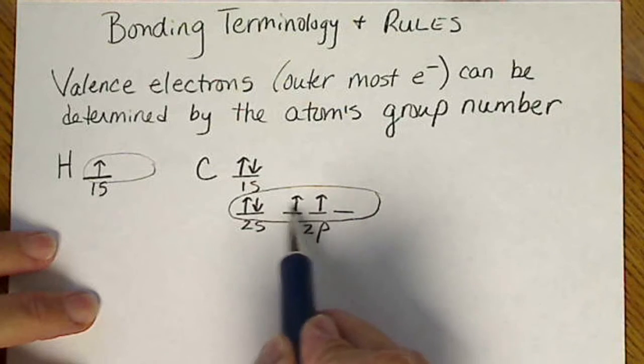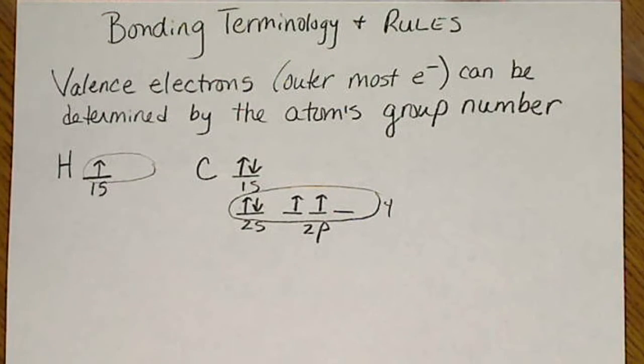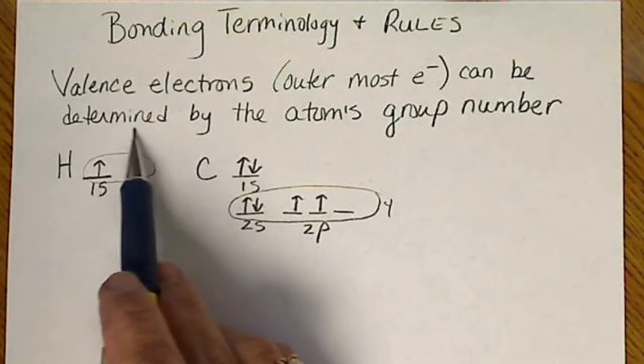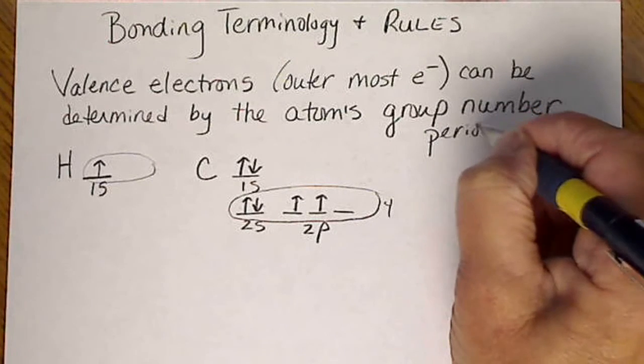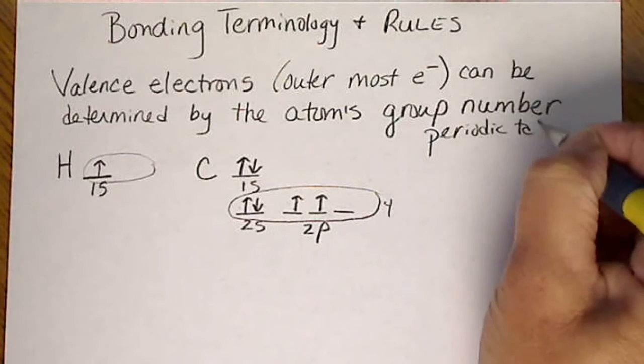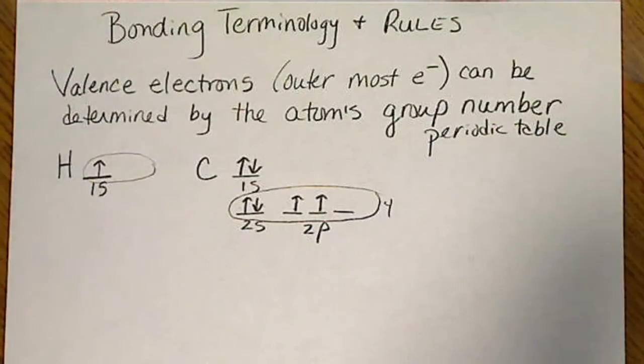Carbon's outermost electrons, we see 1, 2, 3, 4. And we are going to use the periodic table. So the valence electrons are determined by the atom's group number, and this is on the periodic table. So we do not need to draw an orbital diagram to see that.